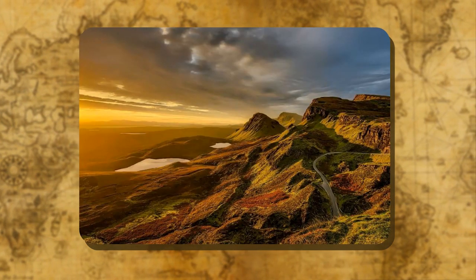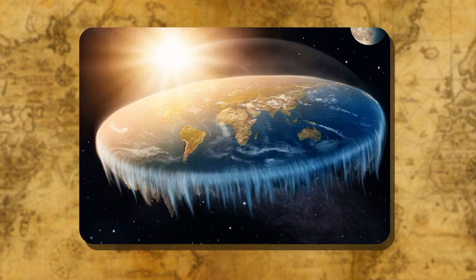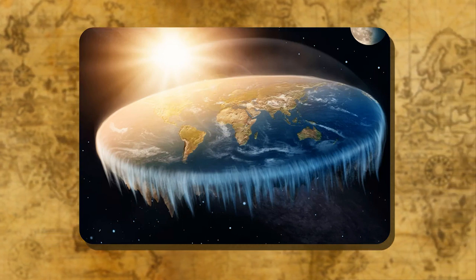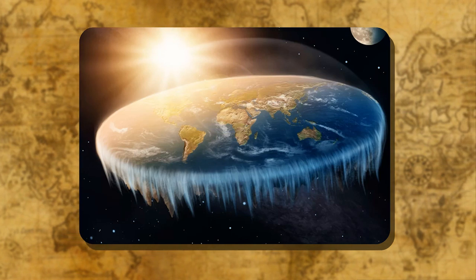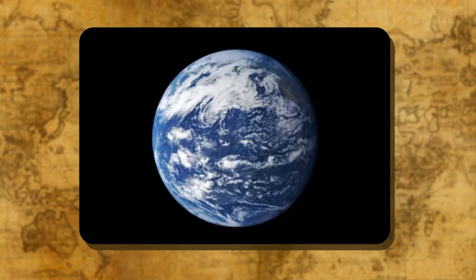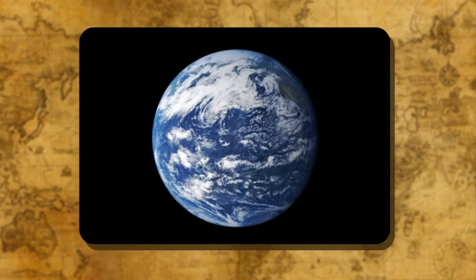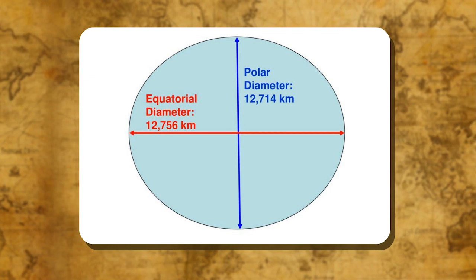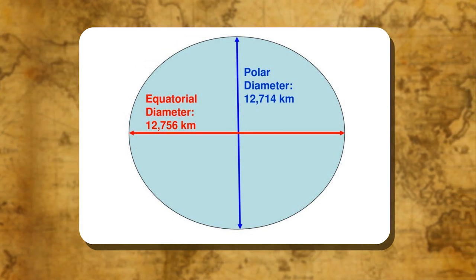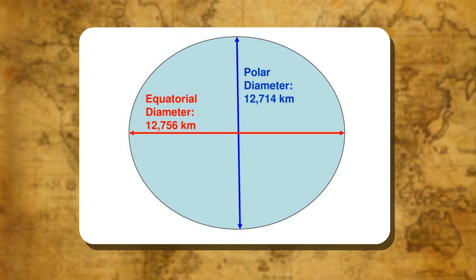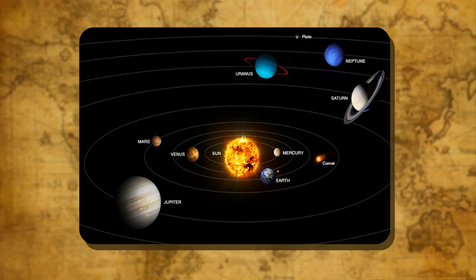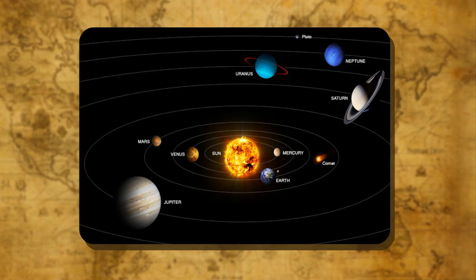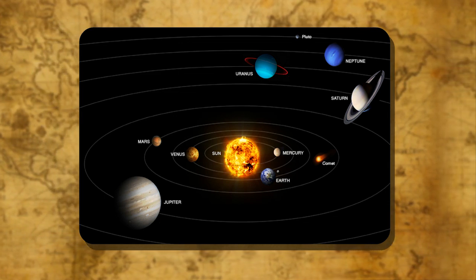The Earth is the only planet in the solar system where life exists, because of its favorable temperature and other conditions. In ancient times, people thought the Earth was flat in shape. First Aristotle, and later Copernicus, declared that the Earth is a sphere. It bulges at the equator and is flat at the poles, so its equatorial diameter is more than its polar diameter.